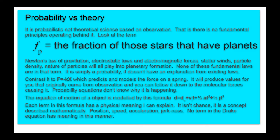Let's contrast it to F equals minus Kx, Hooke's law, which predicts and models the forces on a spring. It will produce values for you that originally came from observation and you can follow it down to the molecular forces underlying it. Probability equations don't know why it is happening. The classic kinematics equation of motion. The horror of students across the planet. D equals D-naught plus V-i-t plus half a t-square models accelerating objects. And we can keep adding terms. We can do one-sixth J-t cubed for the jerk term. And there is a measurement called the jerk. Each term in this formula has a physical meaning that I can explain and measure and understand.